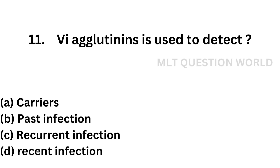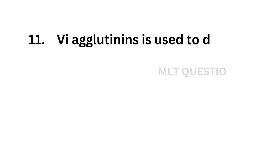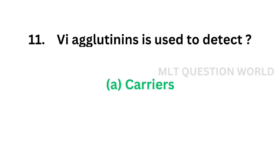Question 11. VI agglutinins are used to detect: Option A, carriers; Option B, past infection; Option C, recurrent infection; Option D, recent infection. The correct answer is Option A, carriers. VI agglutinins are used to detect carriers of typhoid.